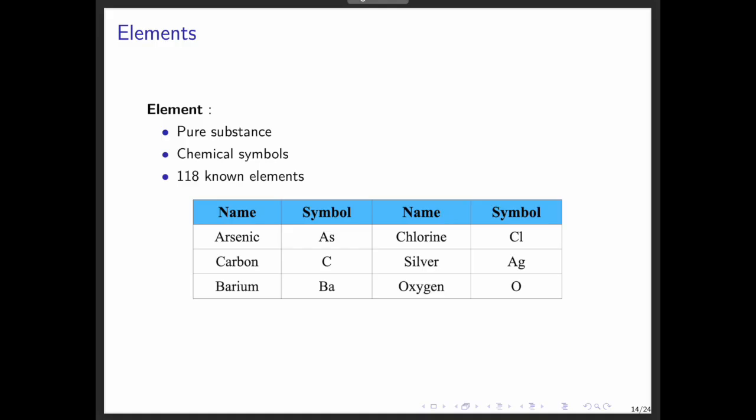Next, let's talk about elements. An element is a pure substance that cannot be broken down into simpler substances. Elements are represented by chemical symbols, usually one or two letters from their names. The first letter is capitalized, the second is lowercase.